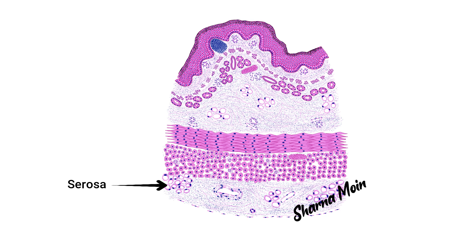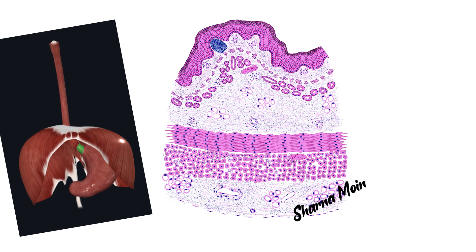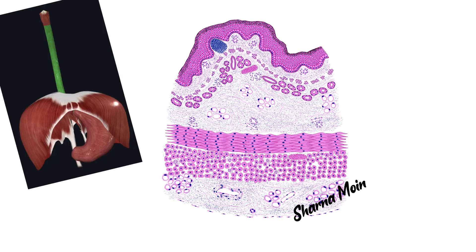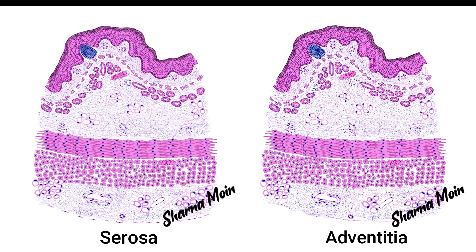Finally we have the serosa. It is also a connective tissue layer containing connective tissue cells, fibers, arterioles, venules, lymphatics, nerves, and adipose tissue, and it is covered by a simple squamous epithelium — the mesothelium. However, the serosa is present only when the esophagus becomes intraperitoneal — after crossing the diaphragm — so only the lower third of the esophagus is covered by the serosa. When the esophagus is not covered by the peritoneum, the outer connective tissue layer is known as the adventitia. The upper and middle thirds lie above the diaphragm and are therefore covered by the adventitia, not the serosa.